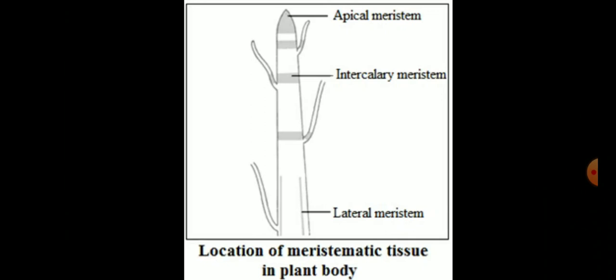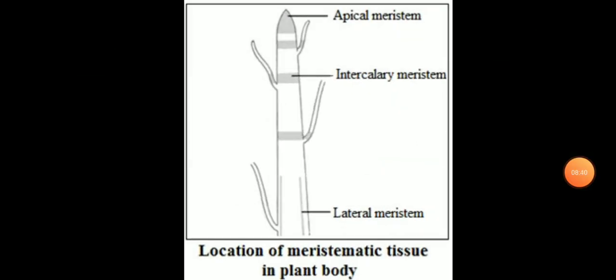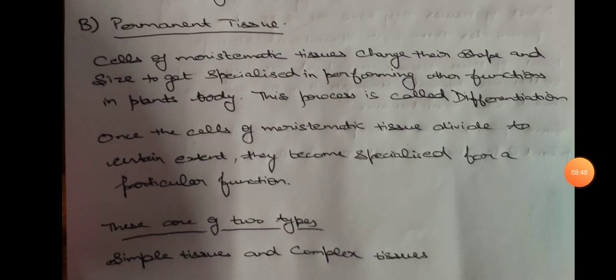This is a very important diagram — you need to remember it because questions are often asked such as 'show the locations of meristematic tissue in the plant body using a well-labeled diagram,' or questions about the function and location of apical or intercalary meristem. I hope meristematic tissue is clear to all of you according to position and function. The second type in the flowchart is permanent tissue.